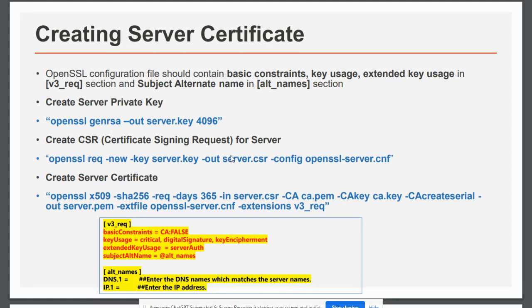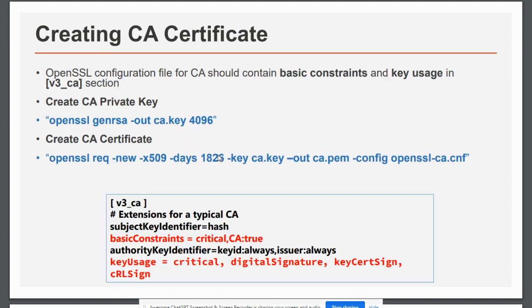The second step is creating a CSR (certificate signing request) for the server using 'openssl req -new', specifying the key from step one with '-key server.key' and output as server.csr. We can specify our own configuration file or use the default. During execution, it will ask for distinguished name information such as country, province, and importantly the common name.